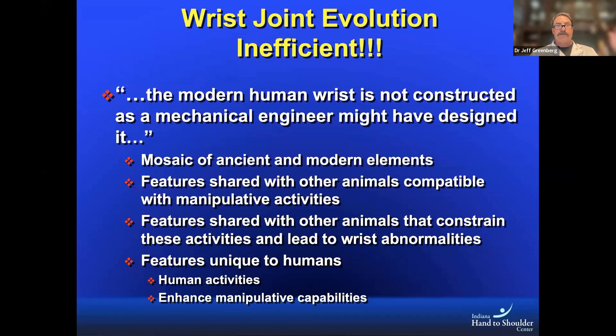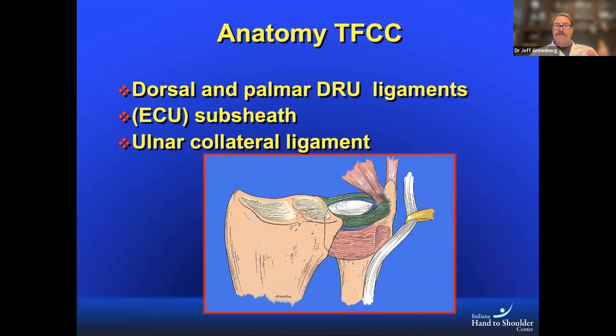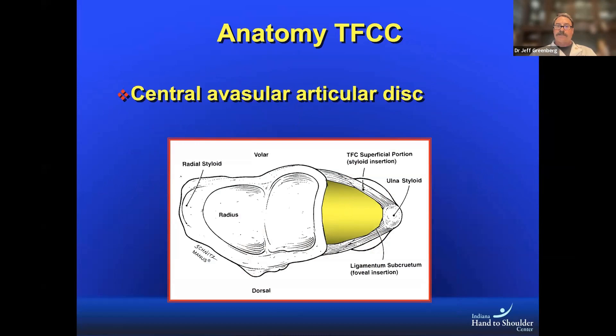The features unique to our wrist are our human activities — being able to manipulate our wrist in space and enhance manipulative capabilities. In a simplistic way, the elements that stabilize the joint include our dorsal and palmar distoradial ulnar ligaments, which attach in the foveal region of the ulnar styloid, the ECU subsheath blending with the dorsal ulnar margin of the dorsal radial ulnar ligament, and the so-called ulnar collateral ligament. The central disc is avascular — we know that from studies dating back to the early 90s.